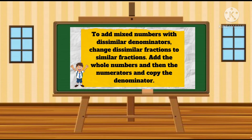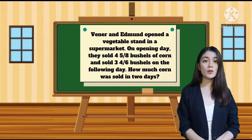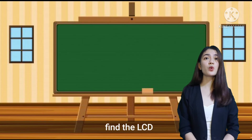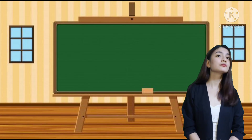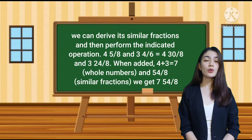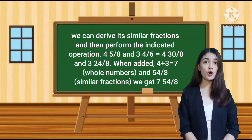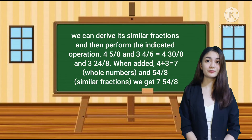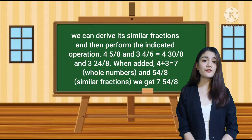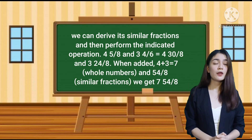To add mixed numbers with dissimilar denominators, change the dissimilar fractions to similar fractions, add the whole numbers and then the numerators, and copy the denominator. What are given? We find the LCD of 8 and 6 to change the dissimilar fractions into similar fractions. So 4 and 5 over 8 and 3 and 4 over 6 become 4 and 30 over 48 and 3 and 24 over 48. When added: 4 plus 3 equals 7, and 30 plus 24 equals 54, giving 7 and 54 over 48.